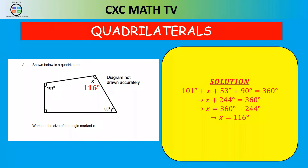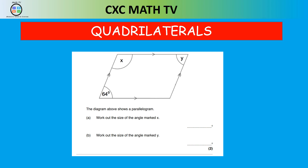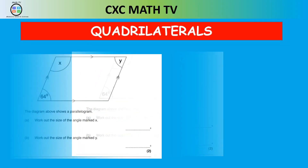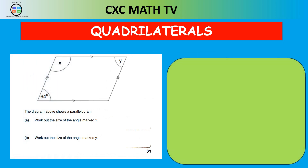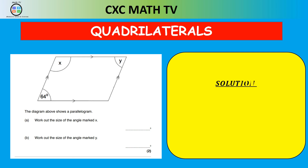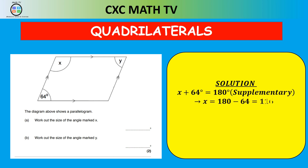Now a more challenging question. The diagram shows a parallelogram — work out the size of angles x and y. Since it is a parallelogram, x plus 64 equals 180 degrees because consecutive angles are supplementary. Transposing, x equals 116 degrees. Angle y equals 64 degrees because opposite angles in a parallelogram are equal. That's why we must know the properties of parallelograms.